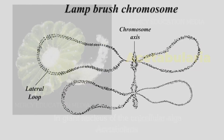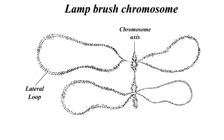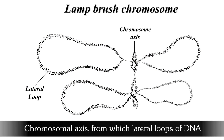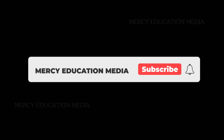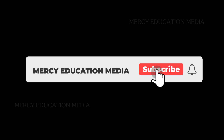The highly condensed chromosome forms the chromosomal axis from which lateral loops of DNA extend as a result of intense RNA synthesis.